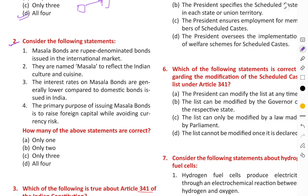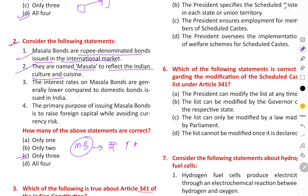The right answer for the Masala Bond question is C, meaning only three options are correct. Masala bonds are rupee-denominated bonds issued in the international market. They are named 'masala' to reflect Indian culture and cuisine. The interest on masala bonds is not necessarily lower compared to domestically issued bonds in India — that statement is not correct.